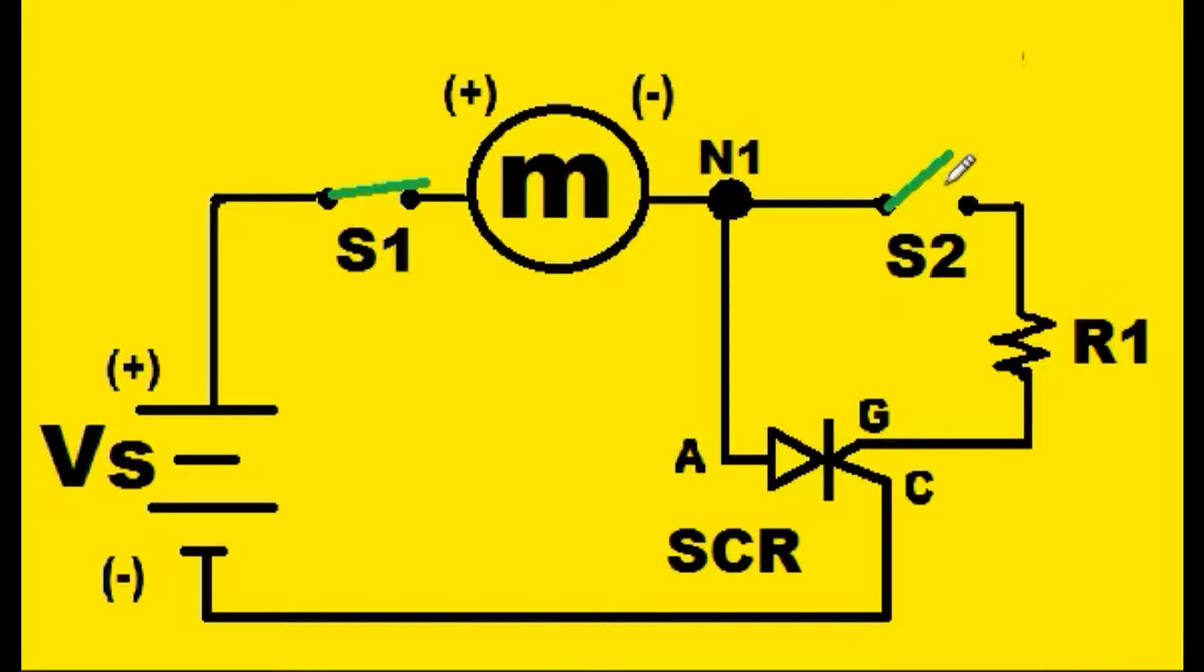So what I'm going to do is come over here and close this gate. So I now close the gate. The holes over here can't get through the SCR, but all of a sudden they sense that this S2 switch is closed.